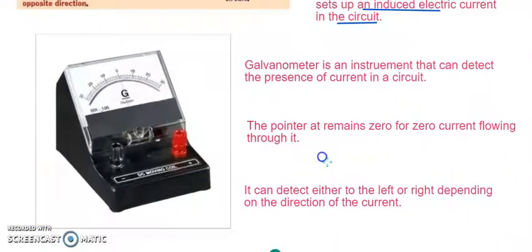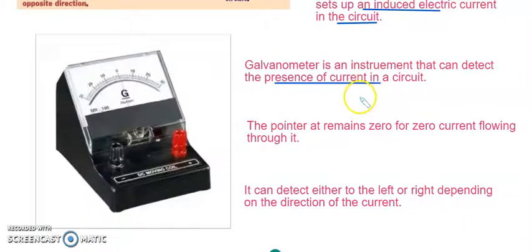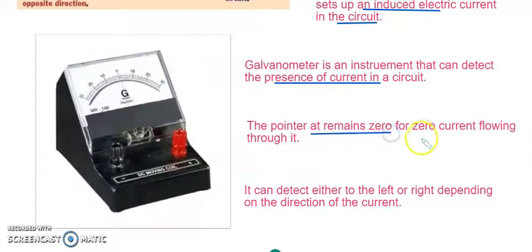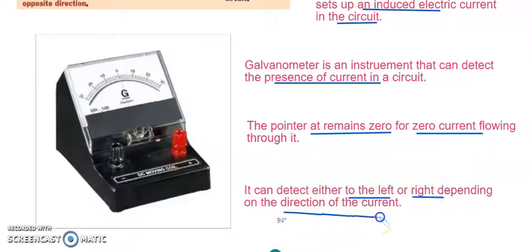A galvanometer is an instrument which detects only the presence of current — it does not measure the amount of current. Please do not confuse it with the ammeter, which actually measures the amount of current flowing. The galvanometer's pointer always remains at zero until current flows, and it will move either towards the left or the right based on the direction of the current being detected.